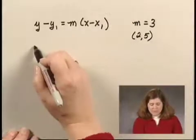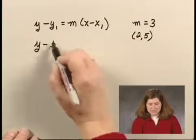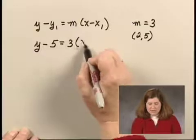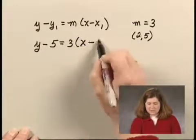Substituting, I keep the y, that's my variable, minus y sub 1, which is 5, equals m, which is 3, times x, that'll be the variable x, minus x sub 1, which is 2.